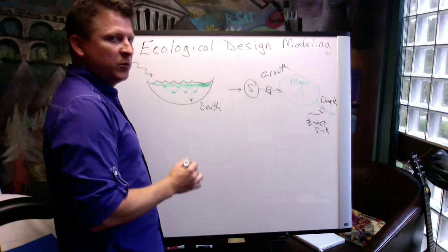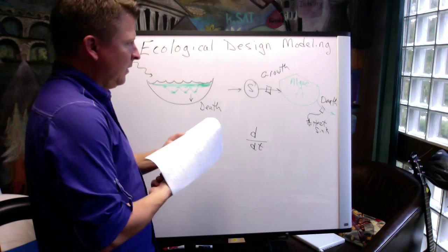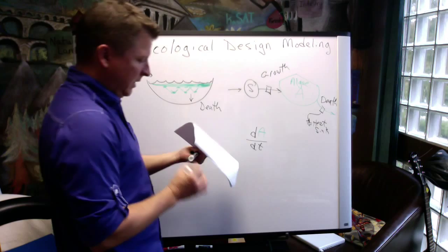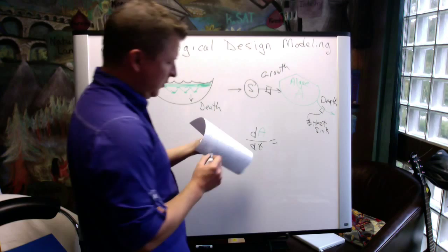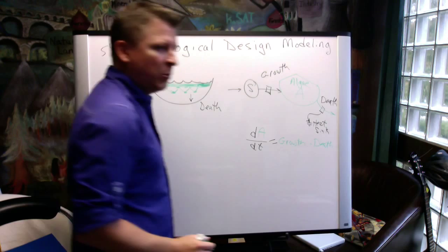So we'll be able to turn this into a differential equation which we will then put into a simulation model in a spreadsheet. So we have the change per time, dA/dt of algae, which is our main storage. And that equals the flow of new algae growth minus death.